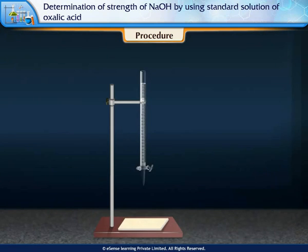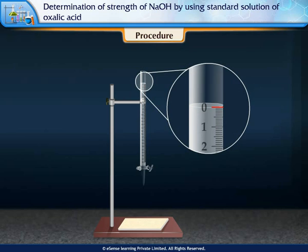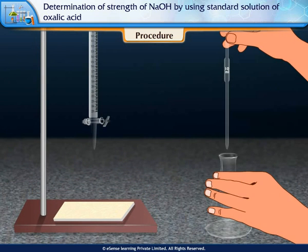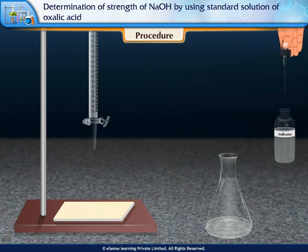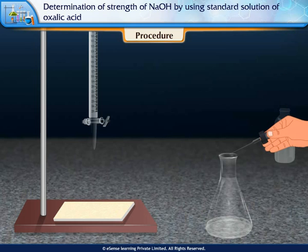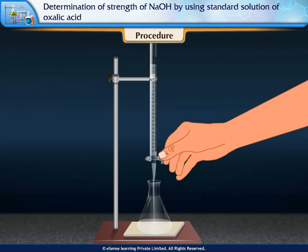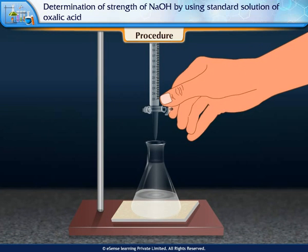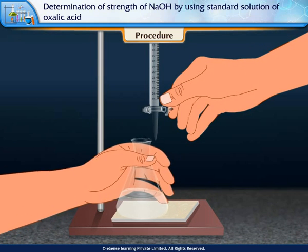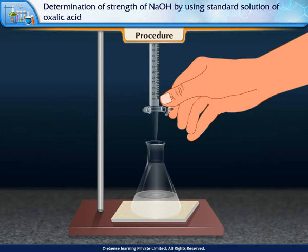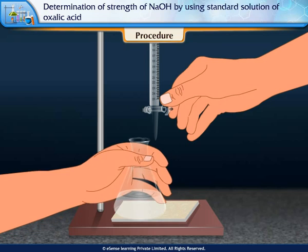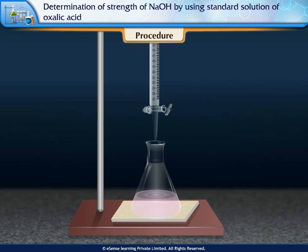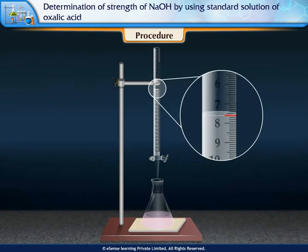Refill the burette to the 0 mark so the initial reading is 0 cm³. Pipette out 10 ml of the given oxalic acid solution and add 1 to 2 drops of phenolphthalein indicator. Add 7 cm³ of the burette solution directly into the conical flask with continuous shaking, then add the burette solution drop-wise until the color changes to light pink. The burette reads 7.6 cm³.